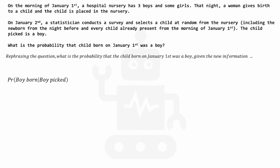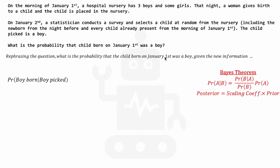This is a classic implementation of Bayes' theorem, which states that the probability of event A given event B is equal to the probability of event A multiplied by a scaling coefficient — this fraction — which is the probability of event B given A, normalized by the probability of event B.